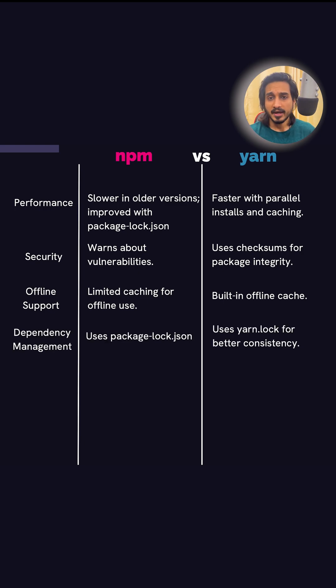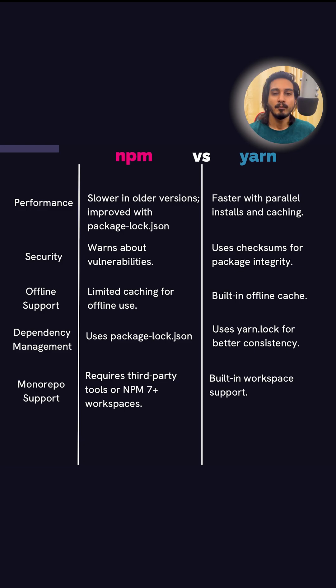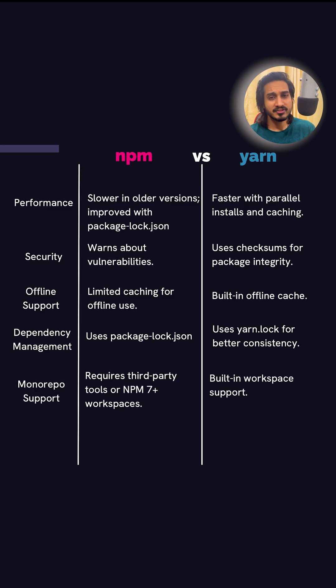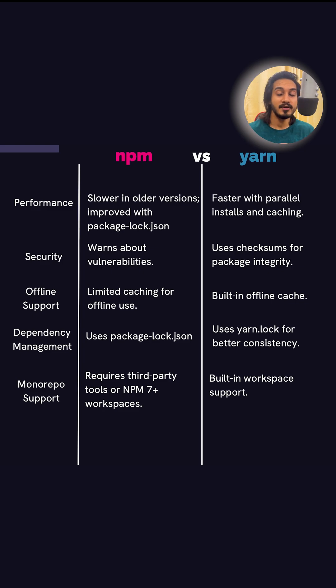For dependency management, NPM uses a package-lock.json file, whereas YARN uses yarn.lock, which provides better consistency. For monolithic repository support, NPM requires third-party tools or NPM 7+ workspaces, whereas YARN has built-in workspace support.